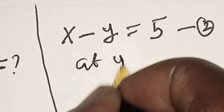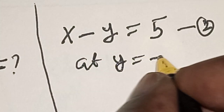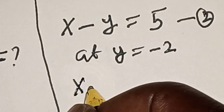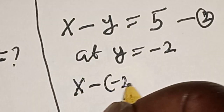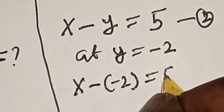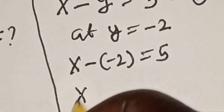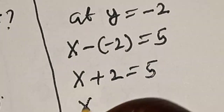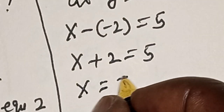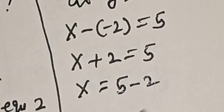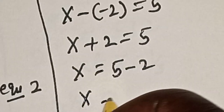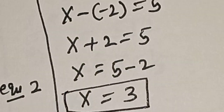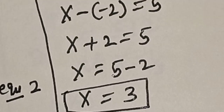Now, when y is equal to minus 2, we have x minus (minus 2) is equal to 5. So x plus 2 is equal to 5, therefore x is equal to 5 minus 2, which gives x is equal to 3. That is the first value of x.